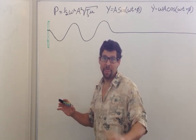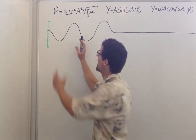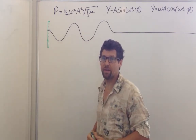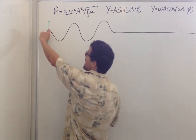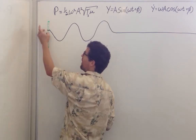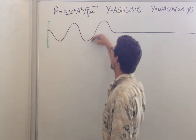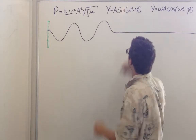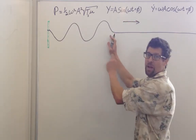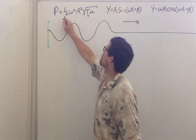Waves transmit energy, and we're going to derive the rate at which energy is transferred across a wave. If I oscillate this up and down on this frictionless pole, I'm going to produce a wave that's traveling in this direction, and it's going to transmit power to the string at this rate.